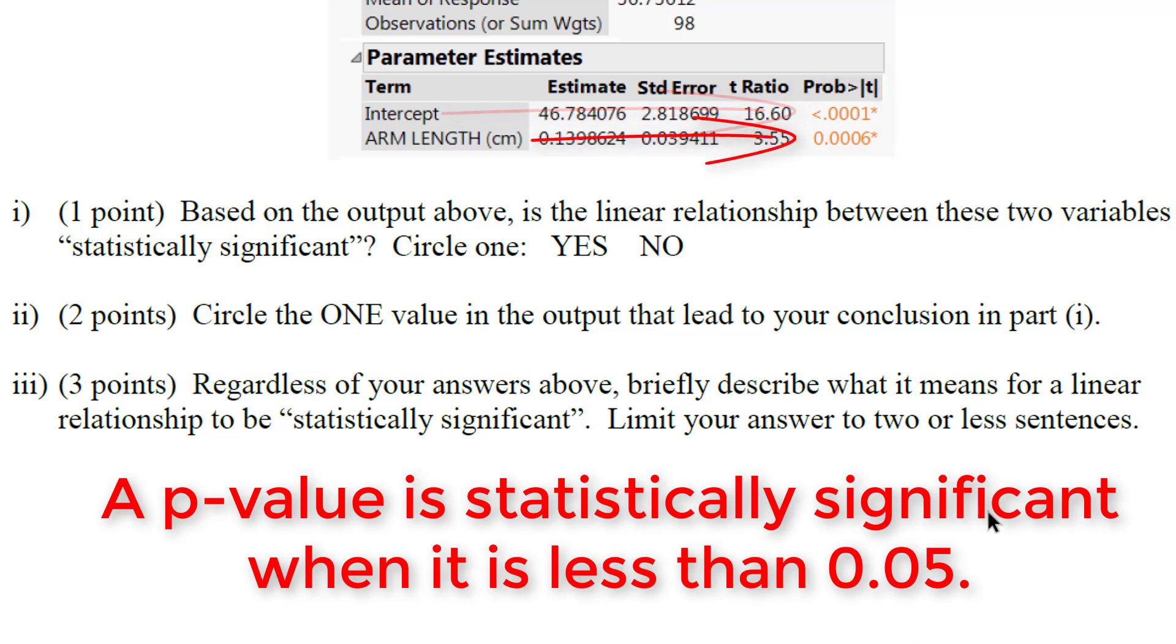And the slope which is related to arm length here is actually your x variable. So the x and the y having some relationship is what we're interested in. So we are looking at the p-value of the slope which is 0.0006.